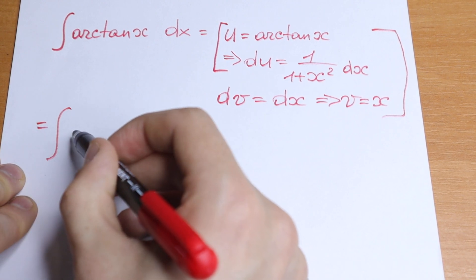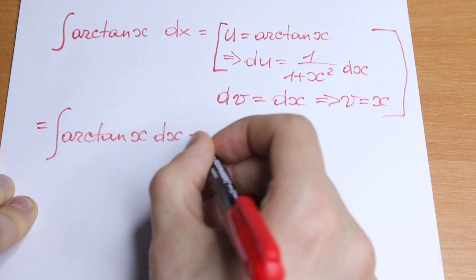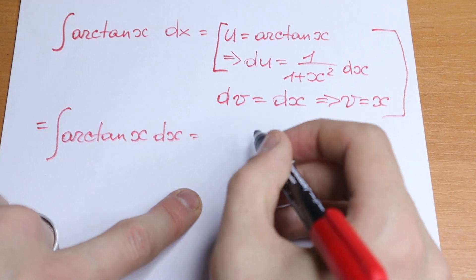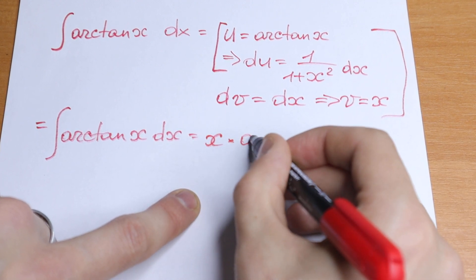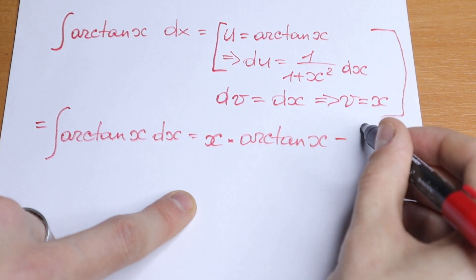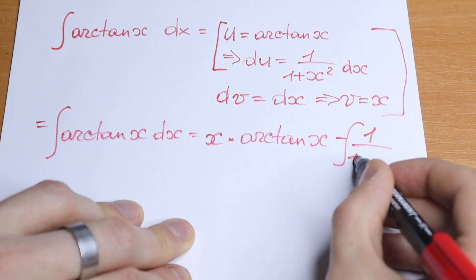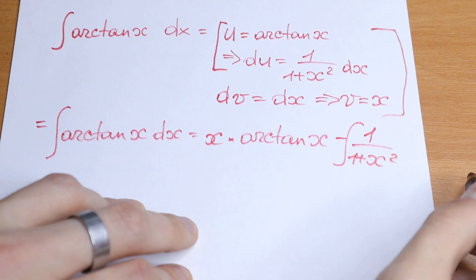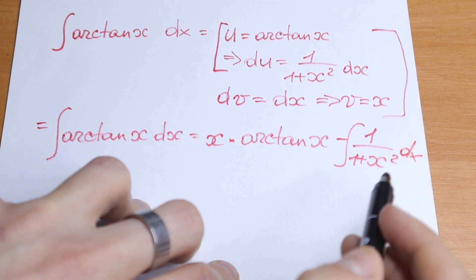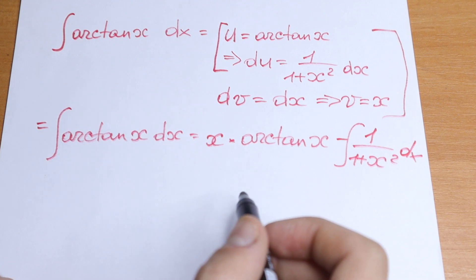So we have all of these elements and we can apply the integration by parts formula. The integral of arctan(x) dx becomes u·v minus the integral of v·du — that is, x times arctan(x), minus the integral of x divided by (1 + x²) dx. We need to find this remaining integral to complete our answer.